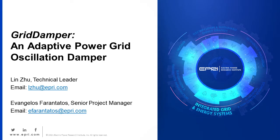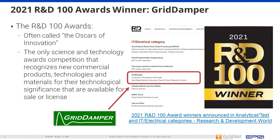This video introduces the Grid Damper, an adaptive power grid oscillations damper. Grid Damper is the winner of the R&D 100 Awards of 2021 in the IT and electrical category. The R&D 100 awards is often called the Oscars of innovation — the only science and technology awards competition that recognizes new commercial products, technologies, and materials for their technological significance that are available for sale or license.